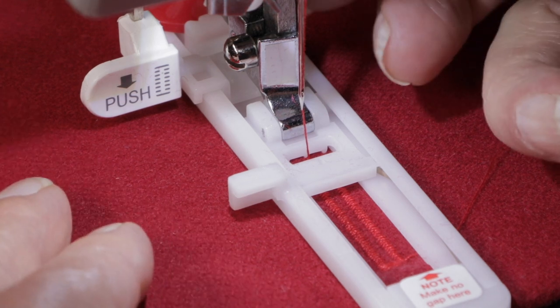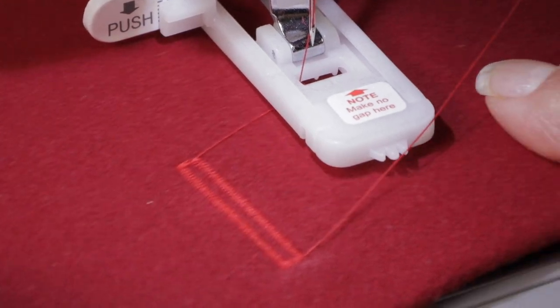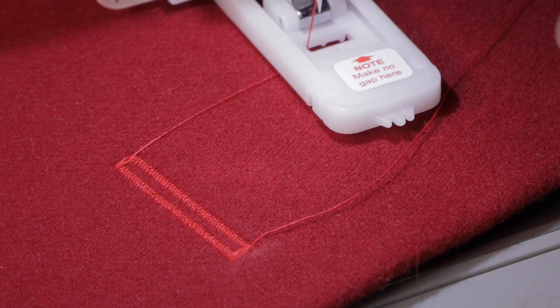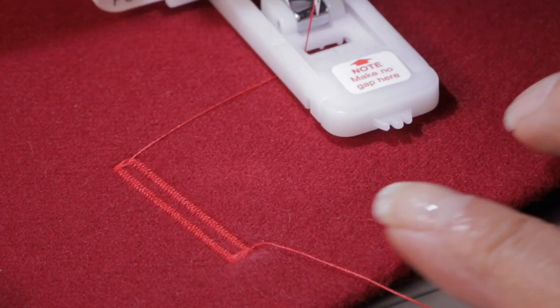When you're finished, just raise the presser foot lifter, and here is your beautiful one-step buttonhole perfectly sized for your button that's in the foot.